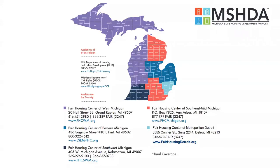These are the Fair Housing Centers. Our organization covers Wayne, Oakland, and Macomb Counties — about 40% of the state population. If we receive a complaint from someone in Genesee County, we'll refer it to legal services. There's the Fair Housing Center of Eastern Michigan in Grand Rapids, Fair Housing Center of West Michigan, Fair Housing Center in Kalamazoo, and one in Ypsilanti. The map also has information for MDHHS and HUD for people wanting to make complaints with those offices.